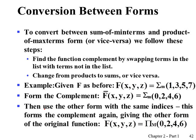So for conversion between forms: given function f in sum of minterms form, the complement is simply obtained by finding the missing indices for the sum of minterms list. Alternatively, using the same indices you can have a product of maxterms. You can easily convert between forms this way.